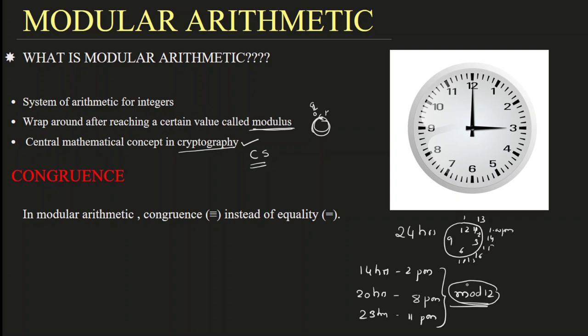So what we are doing here — we wrap around the operation on these integers. We have 12 integers represented in the wall clock. This wall clock is considered as a system of integers — arithmetic for integers — and we are wrapping around after reaching a certain value. Our certain value here is 12. So for every 12 hours, we are wrapping around. That is what — 12 is the modulus.